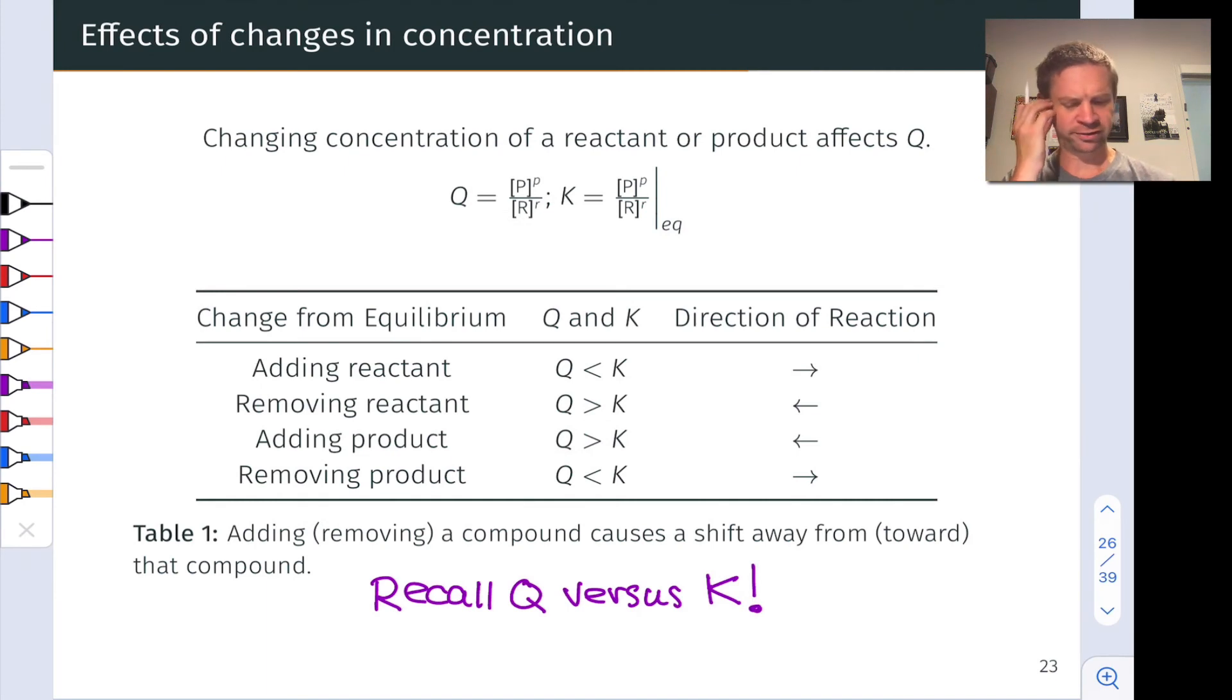So now let's turn our attention to the slide and unpack the math of this a little bit. Generic expressions for Q and K are given on the slide. Q is the reaction quotient for any state and K is the value of the reaction quotient at equilibrium. Let's first imagine adding a reactant or removing a product. Well, in that case, we've made the reactant concentration bigger than the product concentration relative to the initial equilibrium situation. In other words, we've made Q less than K.